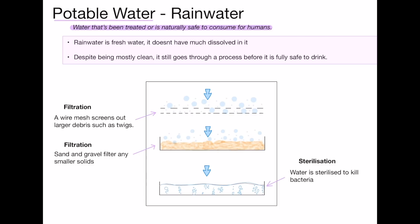The last two topics of GCSE chemistry are potable water. Potable water is simply water that's been treated or is naturally safe for humans to consume. Rainwater is fresh water without much dissolved in it, but despite being mostly clean it still goes through a process before it's fully safe to drink. First, a wire mesh screens out large debris like twigs, then a finer filtration of sand and gravel removes smaller solids. Finally, sterilization kills any remaining bacteria, after which it becomes potable and ready to drink.